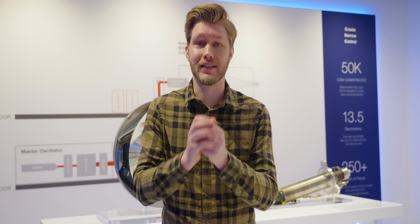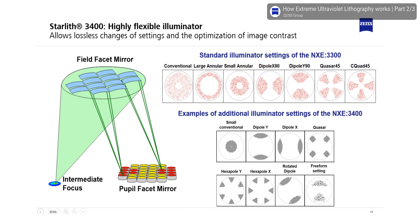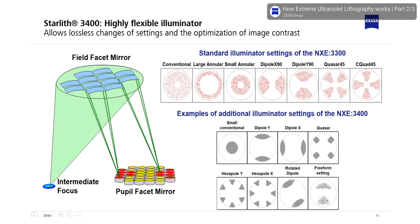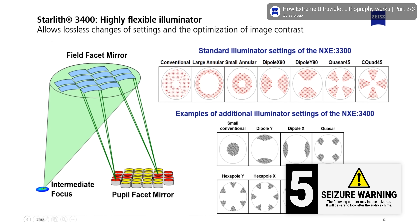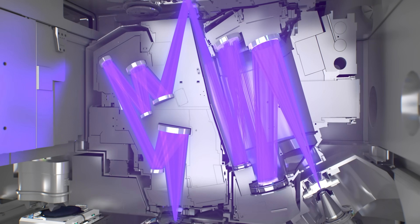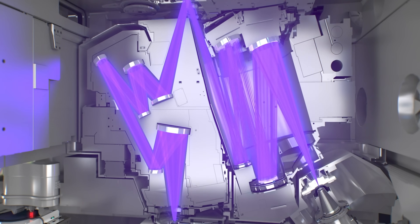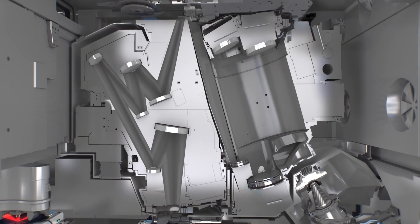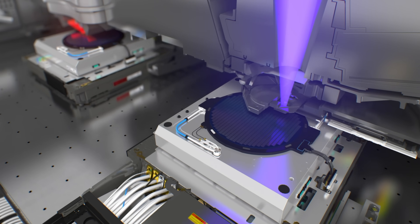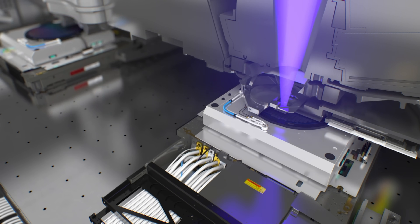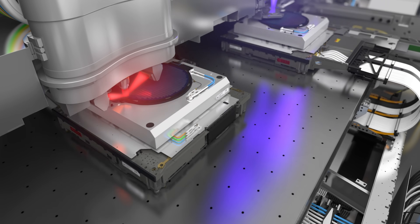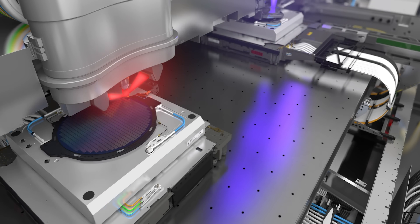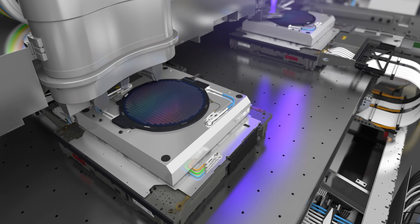Just delivering a circle of light wasn't enough — some features can be better etched by using a different pattern. The light then bounces off of the reticle, which is four times larger than the target, and makes its way onto the target which is held on a magnetically levitating platform. While that is getting printed, a second wafer is measured to ensure it is placed with nanometer accuracy, so the downtime between prints is only a couple of milliseconds.